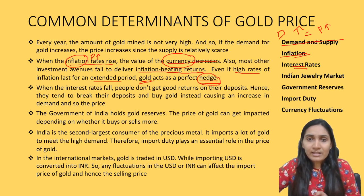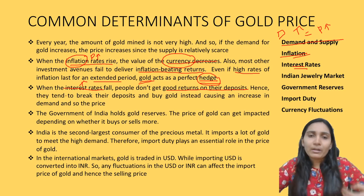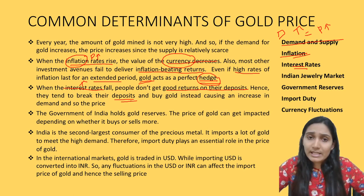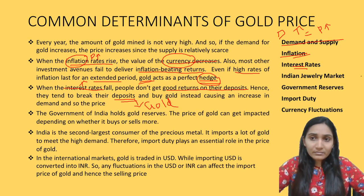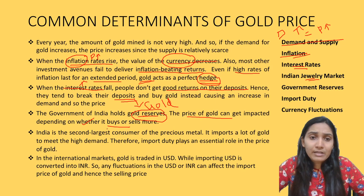Third, interest rates — when interest rates fall, people don't get good returns on their bank deposits or financial assets, so households turn to purchasing gold as an alternative. Fourth, the Indian jewelry market and government gold reserves — the Government of India holds gold reserves through the RBI. Gold prices can be impacted depending on whether the government buys or sells more. If buying is more, the price will increase.